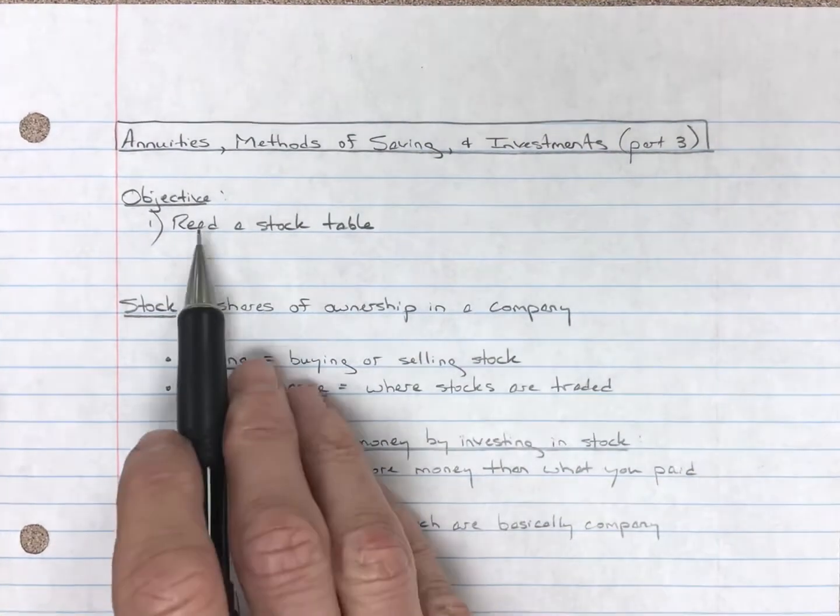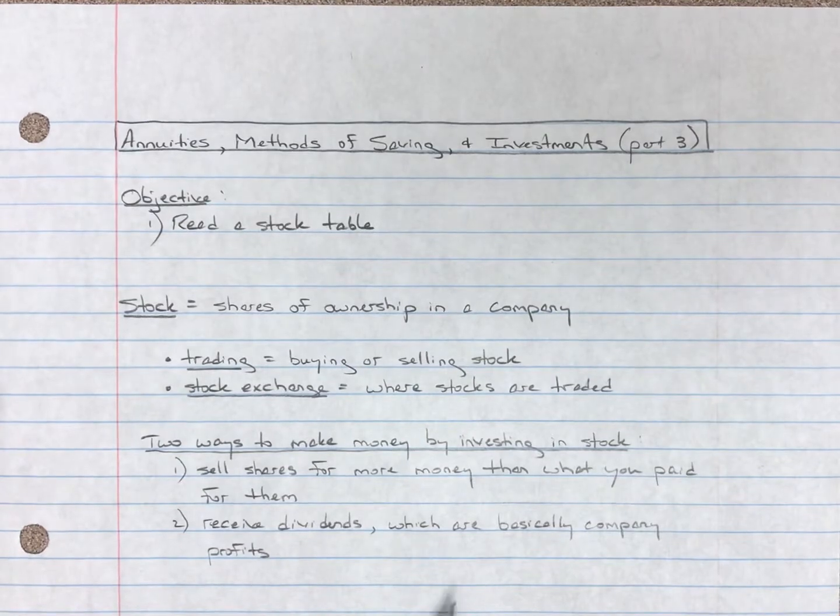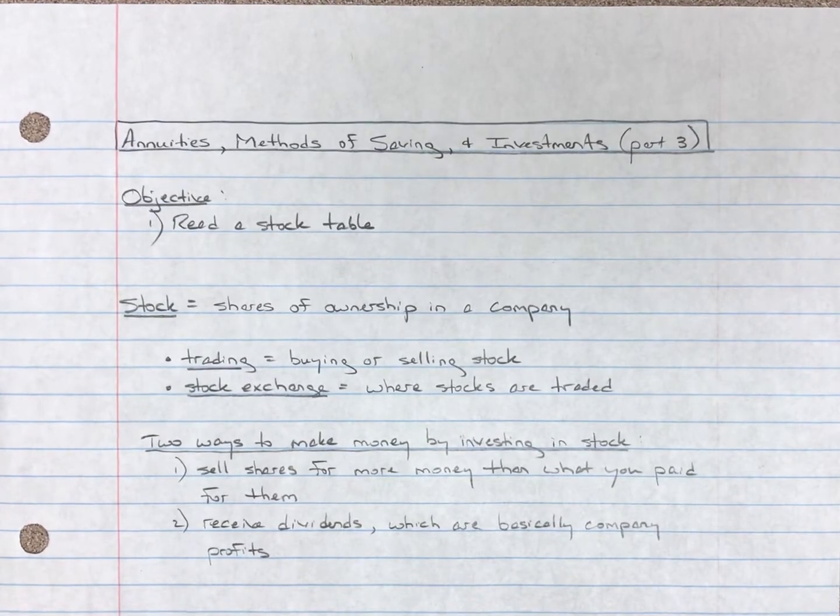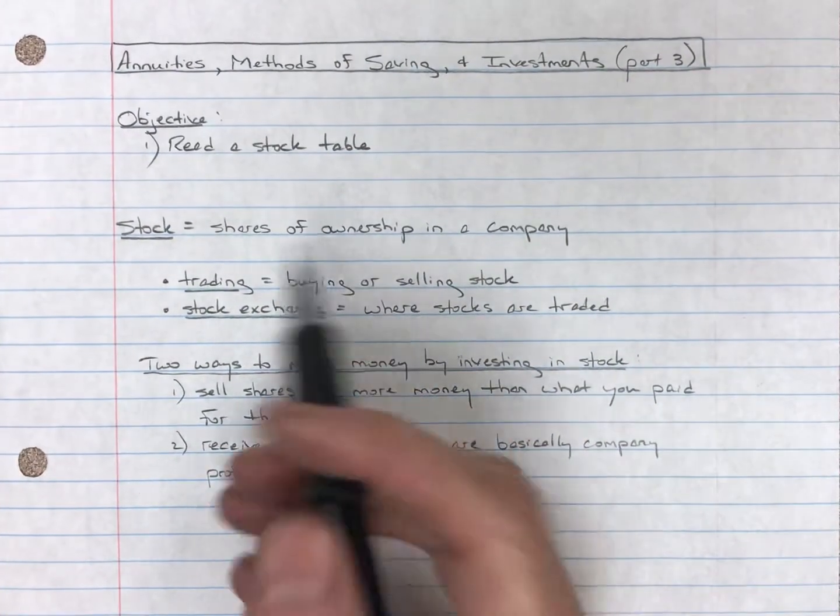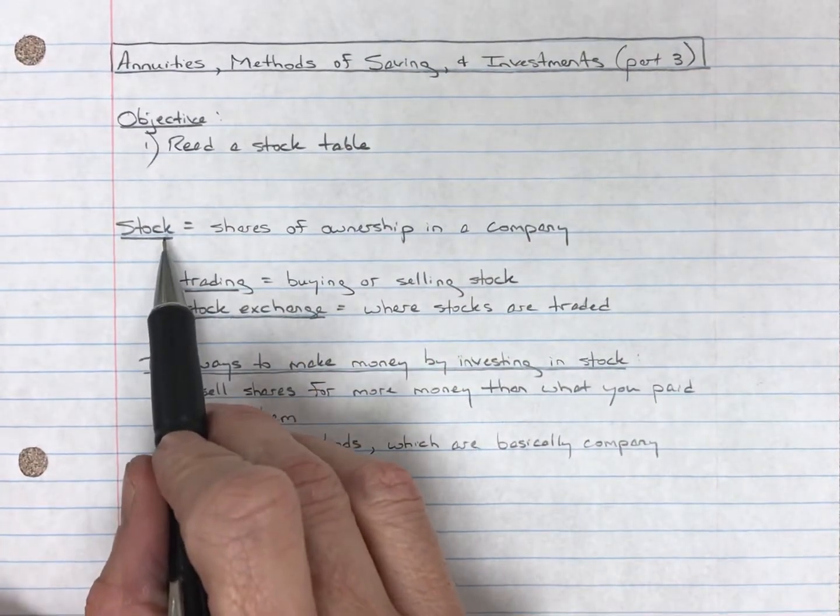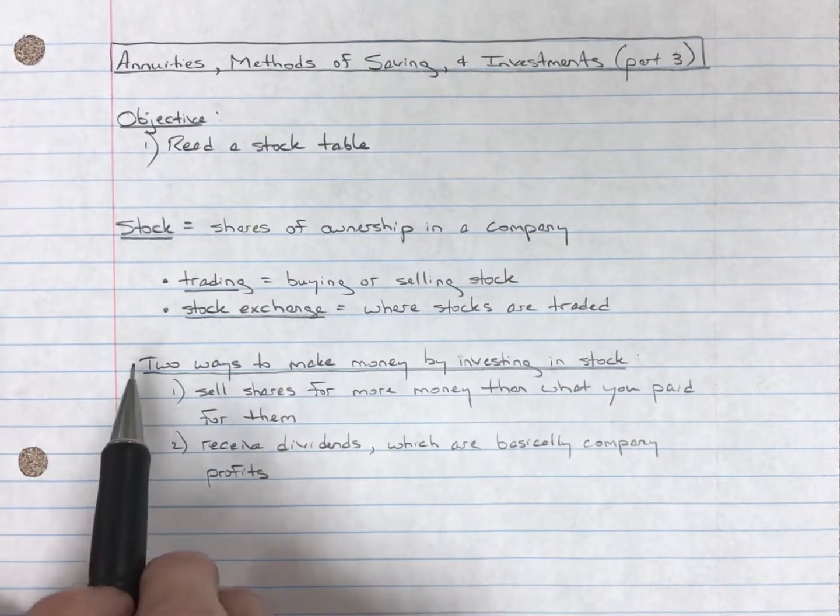We're going to focus on how to read the stock table. But what I want to do first is speak a little bit about some terminology, just to give you some idea of what's going on here. Okay, first, stock is basically shares of ownership in a company.